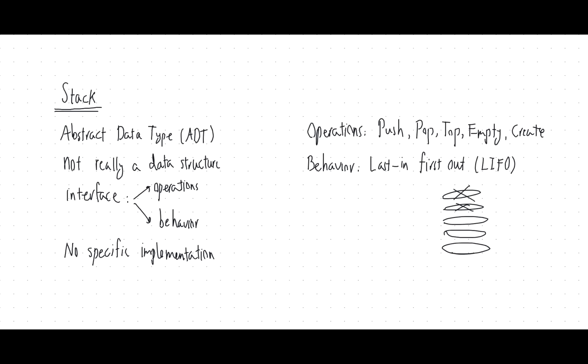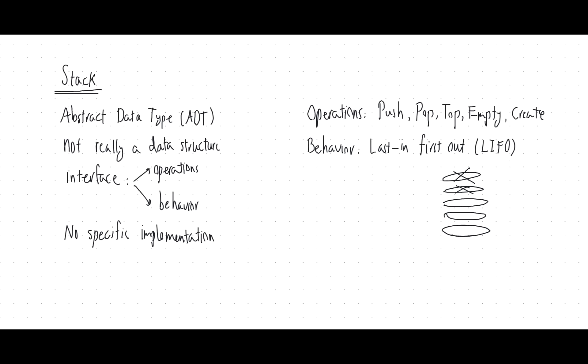It doesn't matter what C++ feature you use to implement this. If it has these operations and the behavior of last in, first out, then we call it the stack. If you change this behavior, you get different abstract data types — like queues, for example, which we will look at in future videos. They support similar operations but the behavior is different.